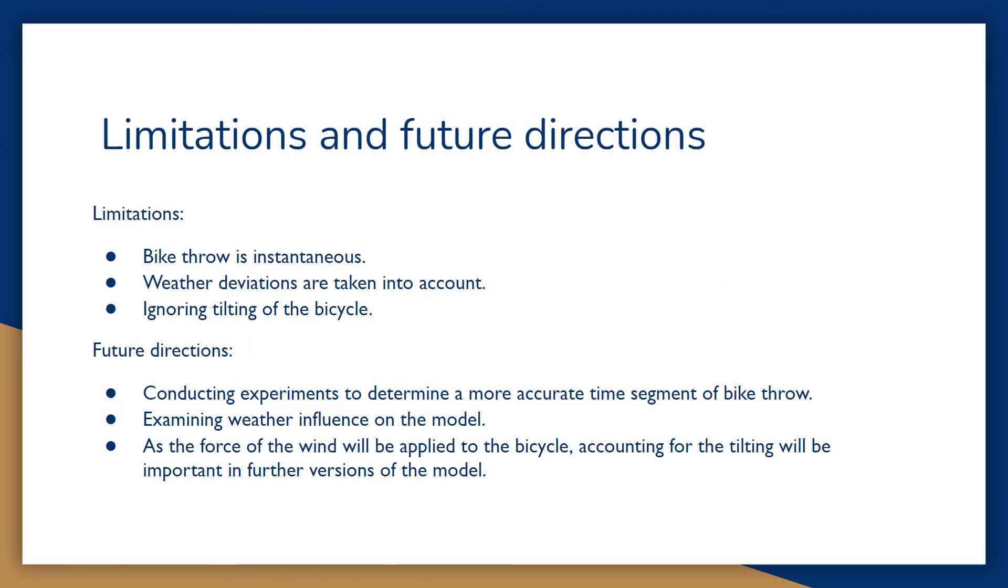All limitations of the proposed model are based on our assumptions. The first one is instantaneousness of a bike throw. This assumption was made by us due to a lack of information, so a series of experiments need to be conducted to determine the time spent on this move more accurately. The second one is the weather. If the weather deviations are taken into account, at least at the level of wind, then this will allow our model to give more realistic results. And the last one is the tilt of a bicycle. Balance plays a big role in cycling and must be considered to get better predictions.